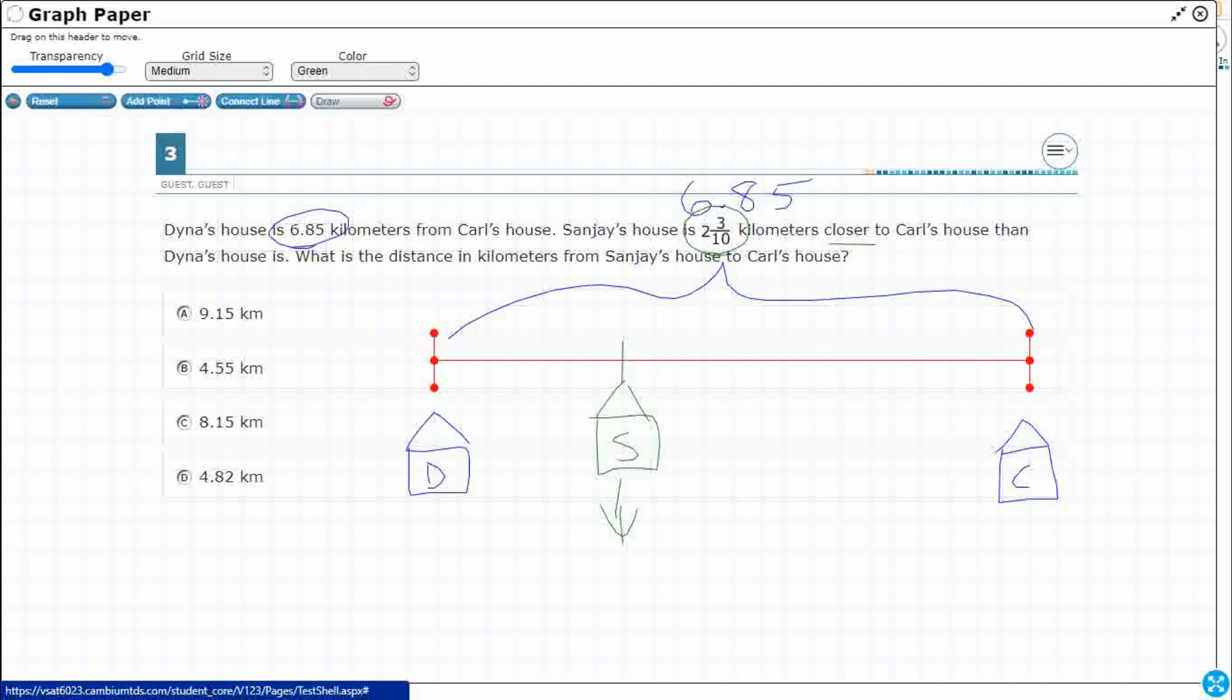Because what we know is that it is 2 and 3 tenths closer. All right, so whether it's down here or whether it's on that straight line, we're going to kind of do this. We're going to say 2 and 3 tenths closer.